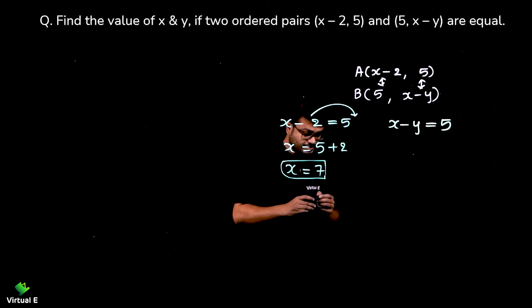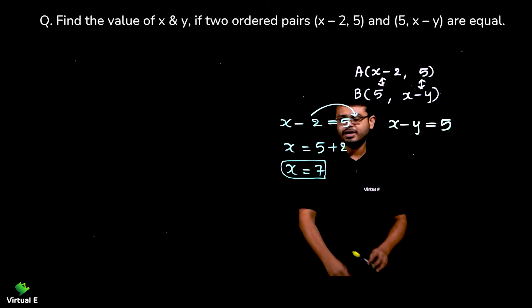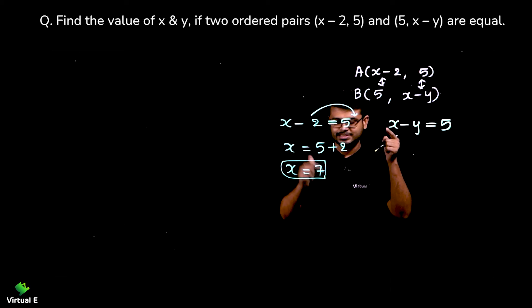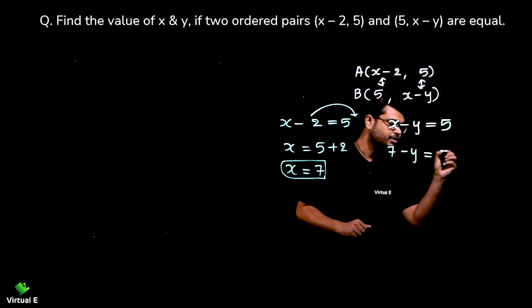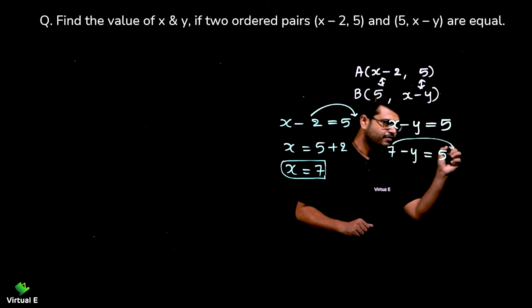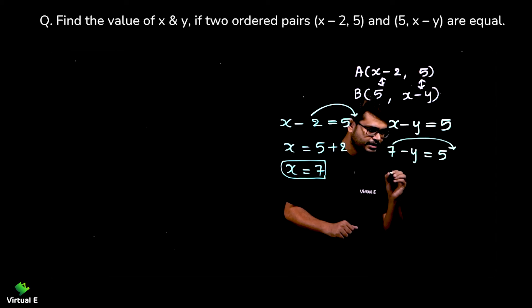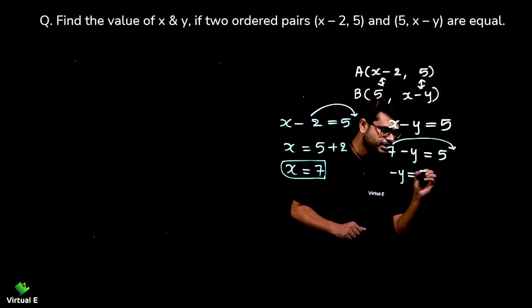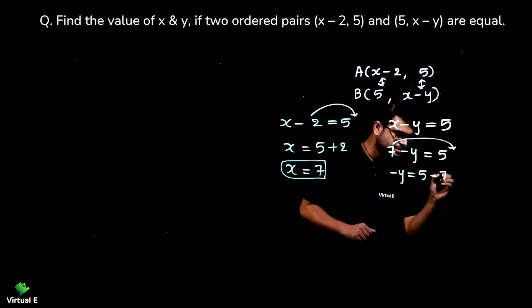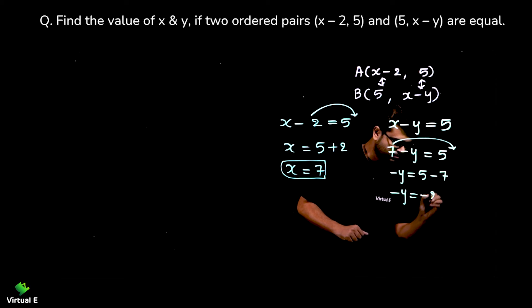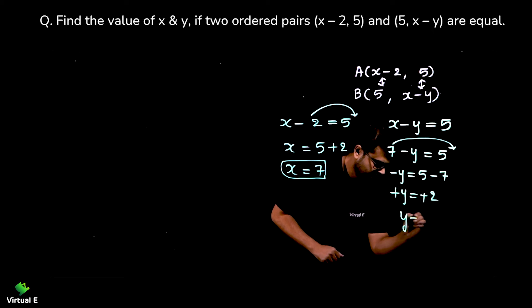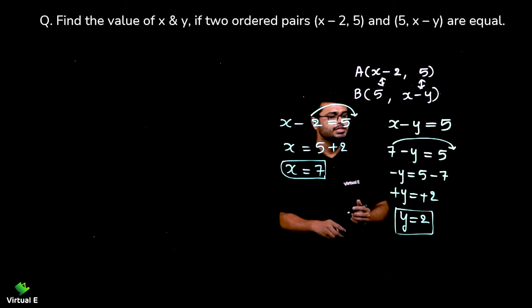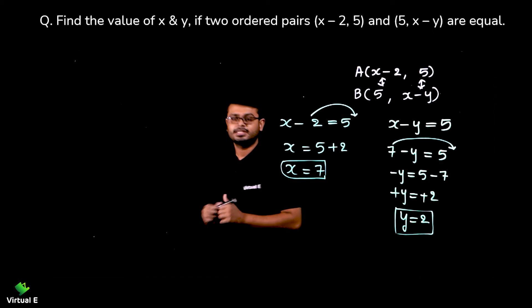Now let's find the value of y. Substituting x equals 7 into the second equation: 7 minus y equals 5. Shifting 7 over gives minus y equals 5 minus 7, so minus y equals minus 2. Therefore y equals 2.